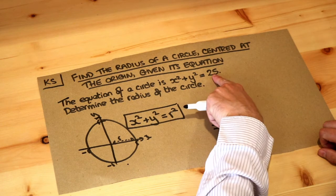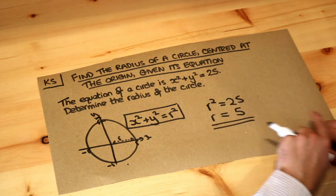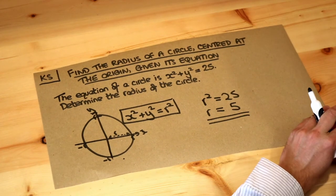So all you need to do is basically just square root that number on the right hand side of the equation and that will give you the radius of the circle.